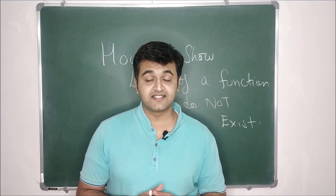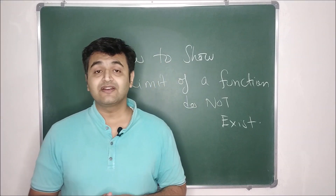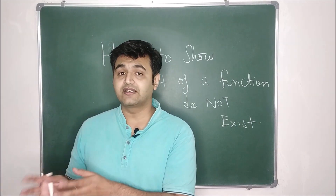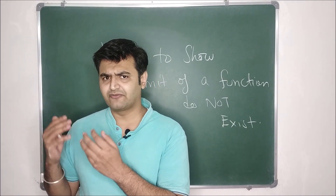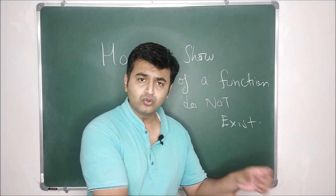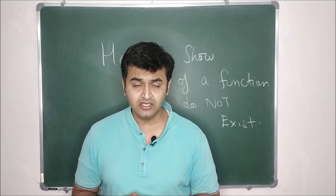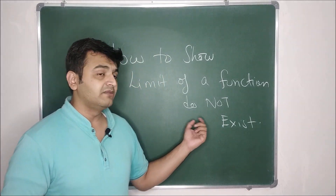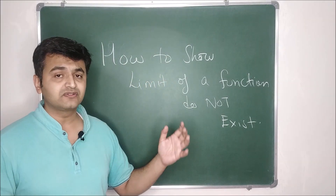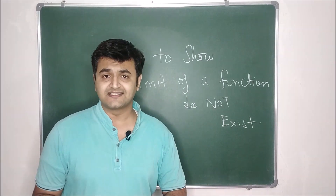Hello everyone, welcome to my lecture series on functions of several variables. Today we are going to see: suppose you have a function from a higher dimensional space — say from 2, 3, or n-dimensional space — to the real number system, that is a scalar-valued function. Then how do you show that the limit does not exist? We will see this using a couple of examples.